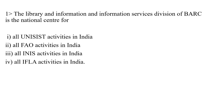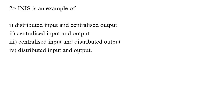There are different questions asked in previous UGC past papers on Library and Information Services. One question: the Library and Information Services Division of BARC is the national center for — as we discussed, BARC is the national center for all INIS activities in India. Next, INIS is an example of centralized input and distributed output.